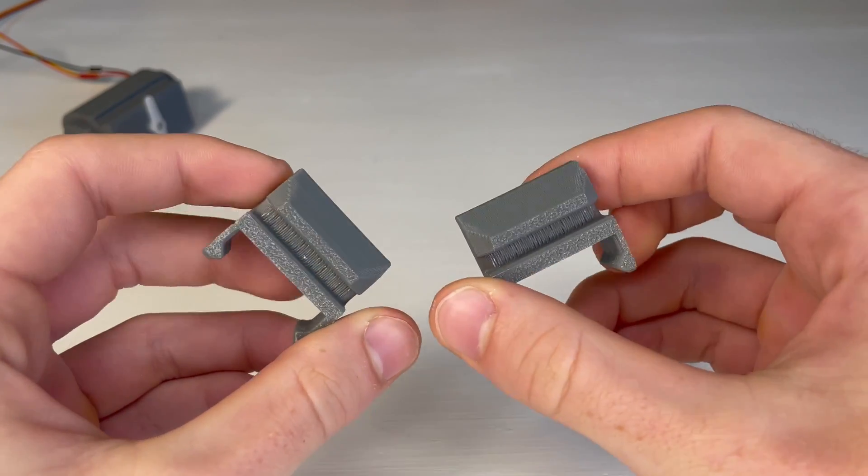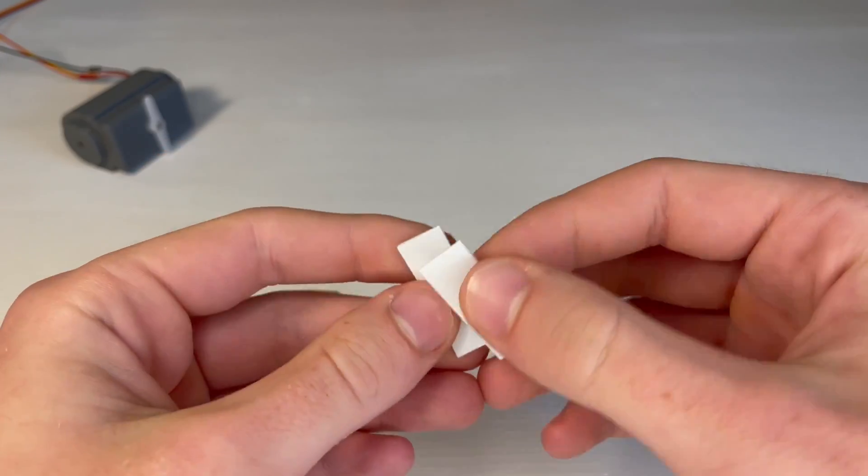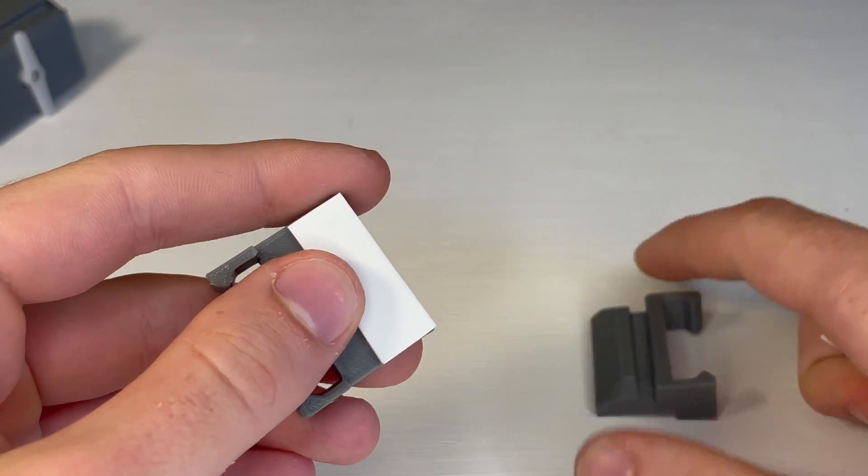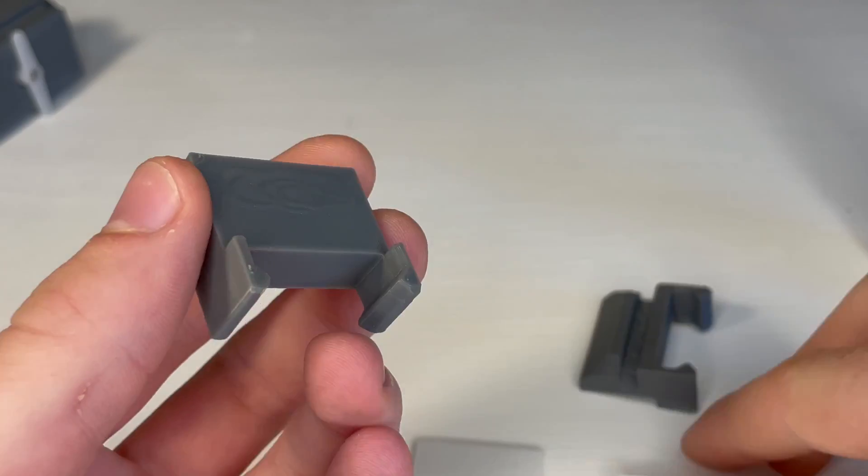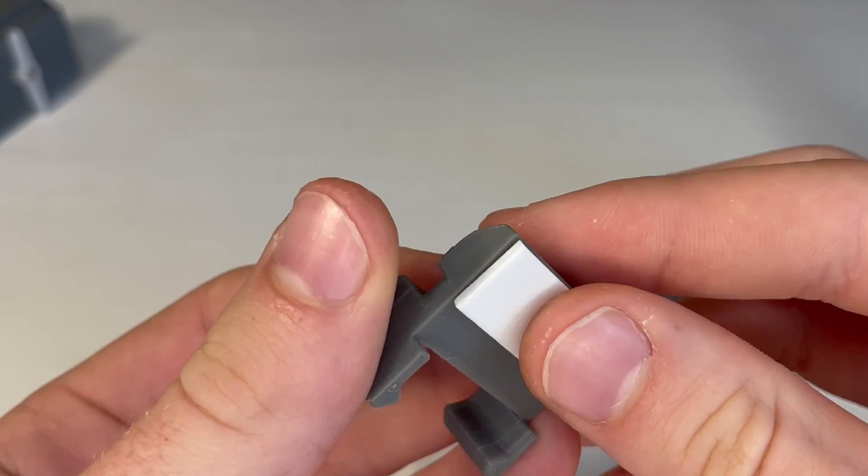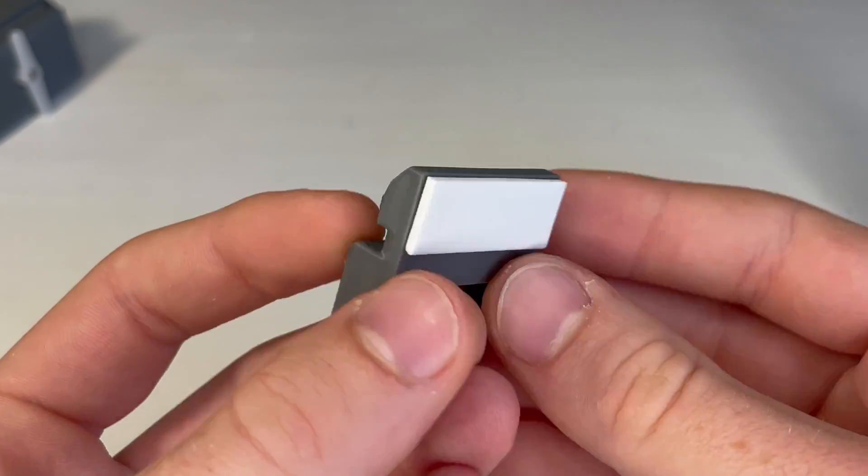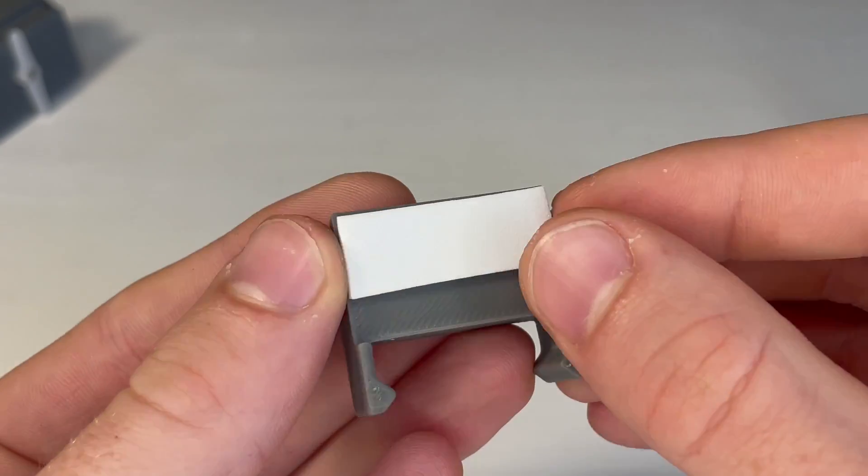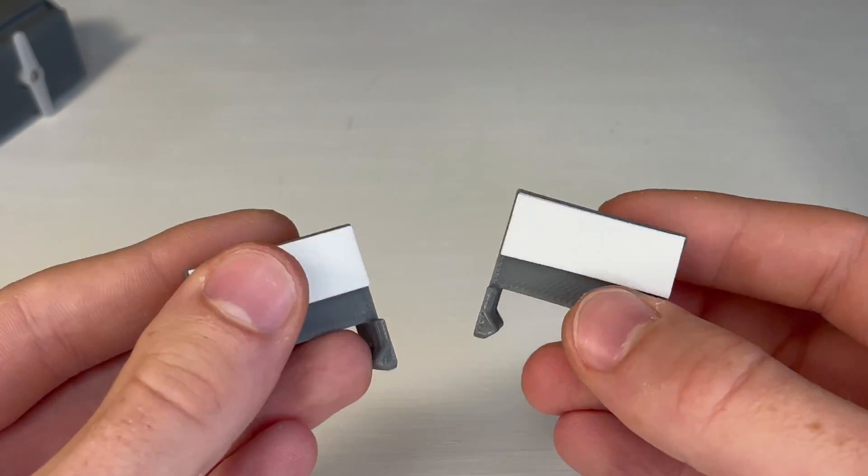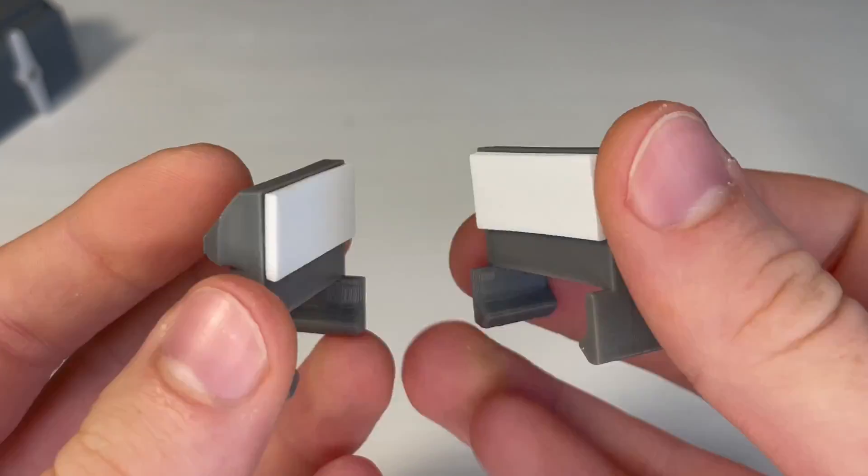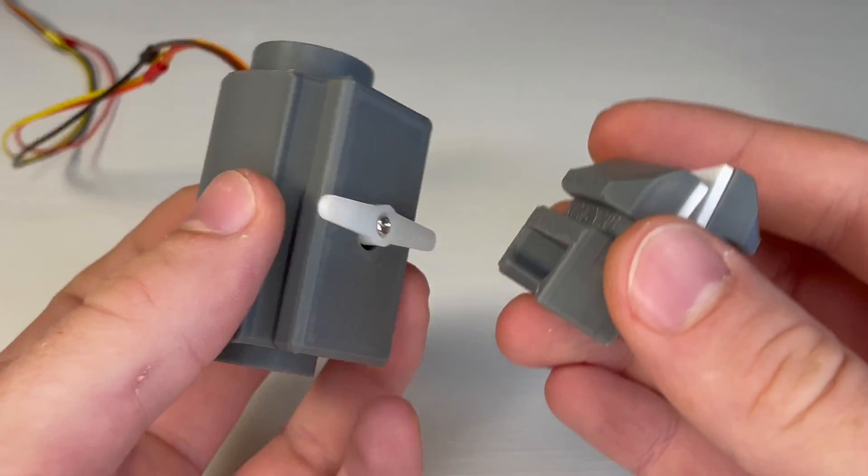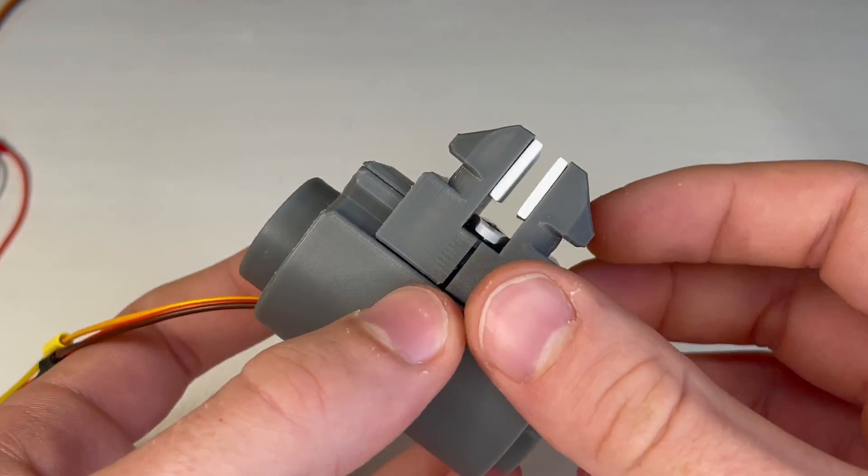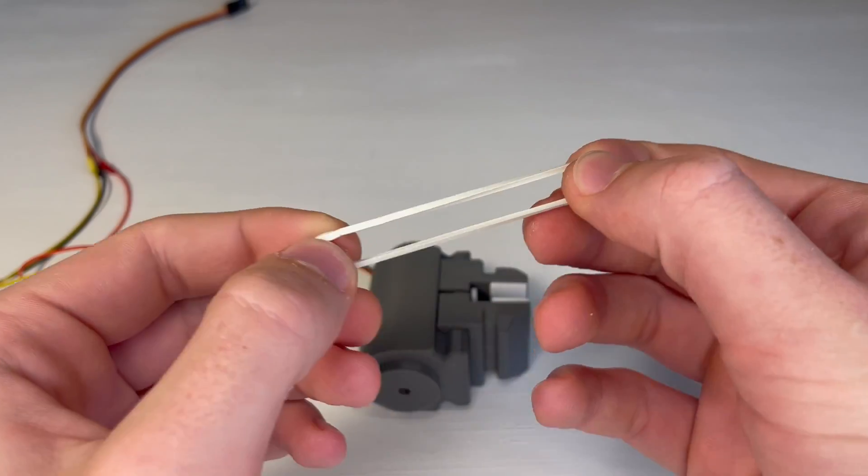Then taking the gripper fingers we can glue down some foam pieces onto each one. Then you can slide them onto the gripper.